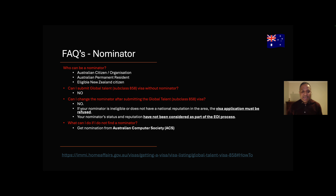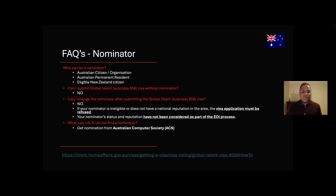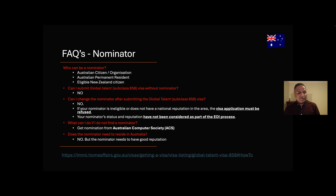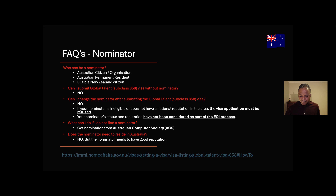If the nominator is not a very prominent person, you might be asked to provide additional documents to prove they have standing in the Australian or global community. What can you do if you don't have a nominator? As I explained in the previous part, you can approach organizations like the Australian Computer Society — ACS — to see if they can nominate you based on your credentials and qualifications. Does the nominator need to reside in Australia? A simple answer is no; he can reside outside Australia, but he needs to have a national or global reputation.